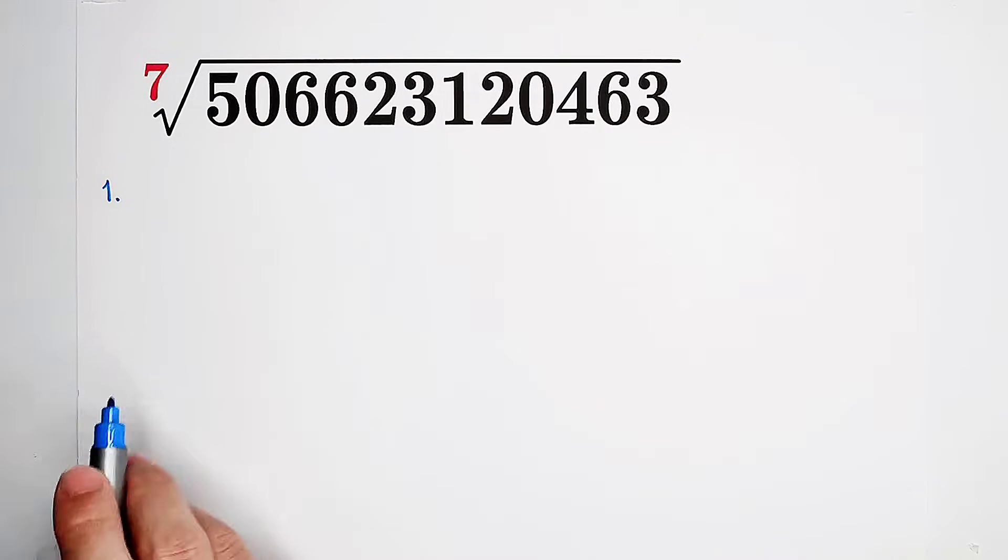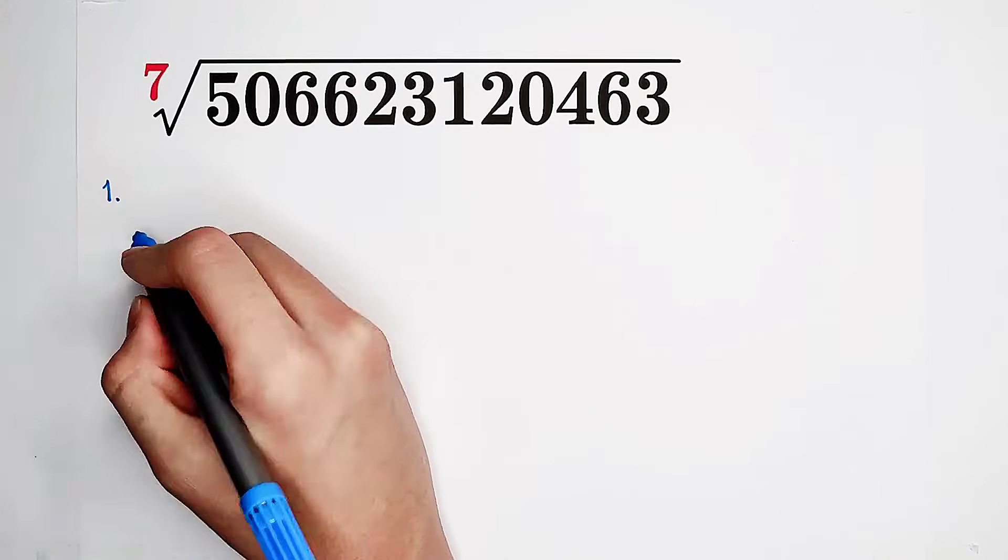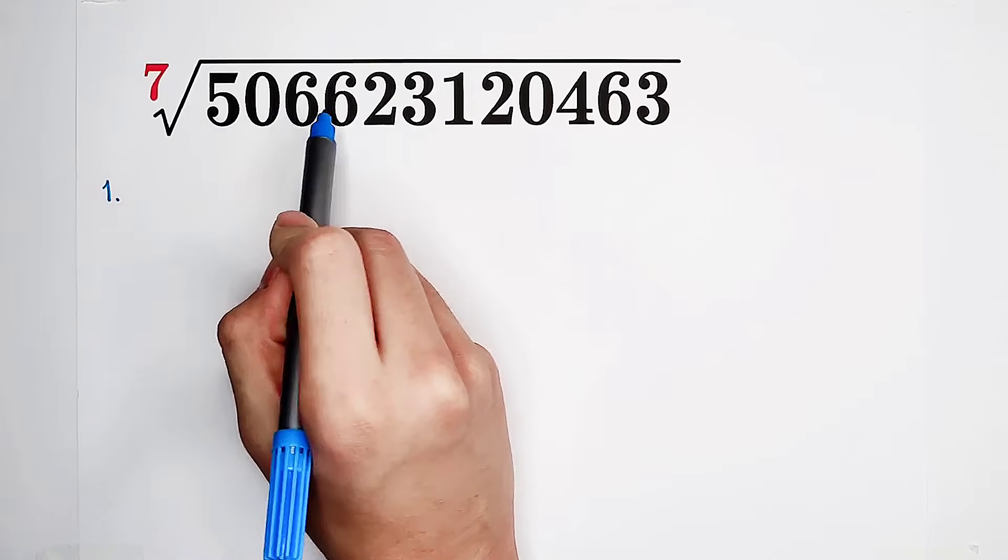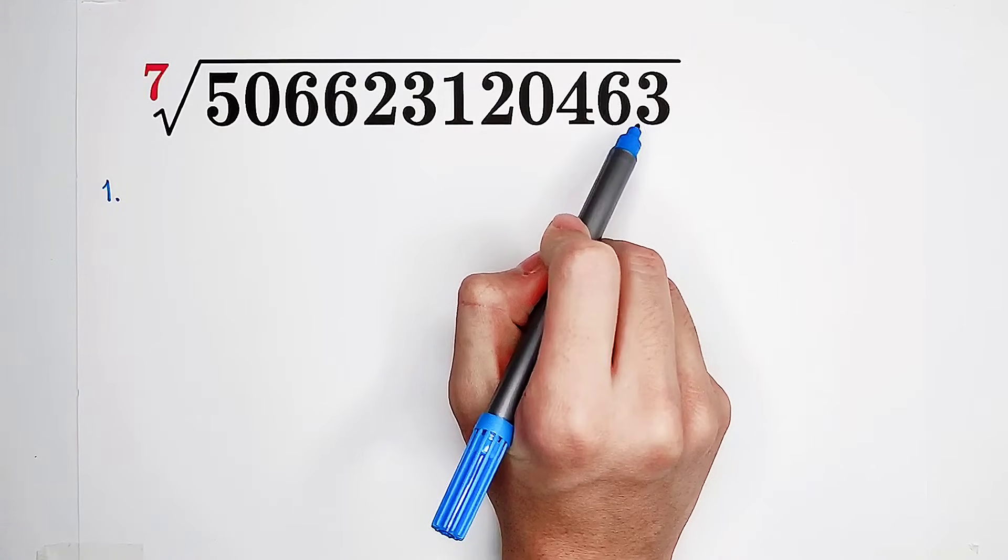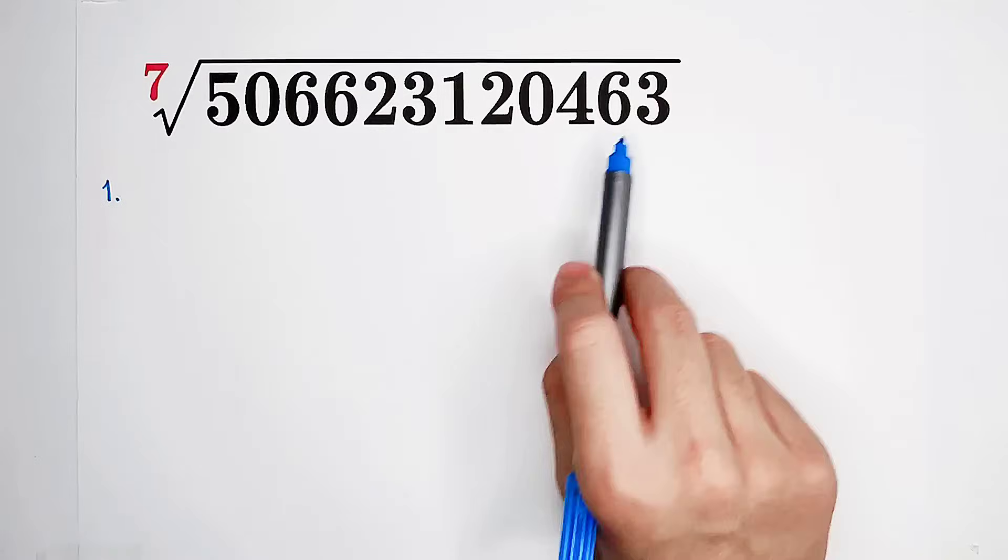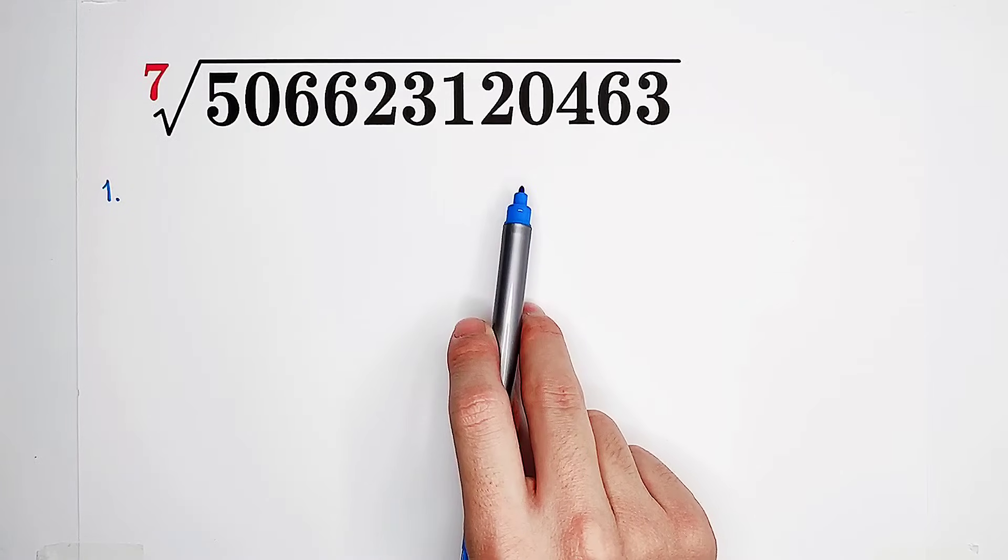Of course, how shall we do that? How can we determine this? Now, 1, 2, 3, 4, 5, 6, 7, 8, 9, 10, 11, 12. This number under the root has 12 digits.